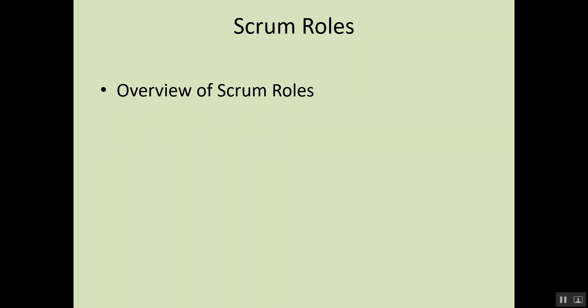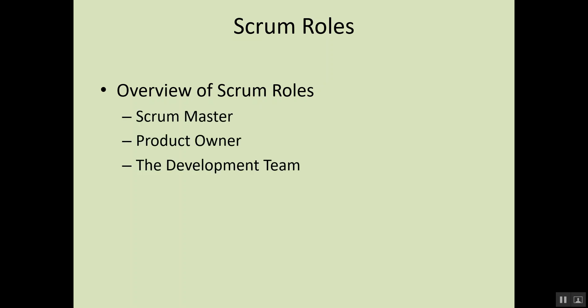Moving on to Scrum roles — the roles in Scrum are Scrum Master, Product Owner, and the Development Team. The CST will cover Scrum Master prerogatives, responsibilities, things the Scrum Master should not do, authority and functions of each member, how they help each other, and how they help in different meetings. This will all be covered in the first day of the two-day training.